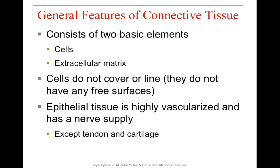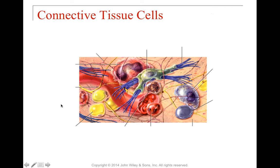Connective tissue has two major elements: the cells themselves and the extracellular matrix. The extracellular matrix is basically the glue that holds the cells together. The cells don't have organizational patterns — they don't cover or line anything, and they don't have free surfaces. Connective tissue is highly vascularized and has a nerve supply. The major exceptions are tendon and cartilage, which are examples of connective tissue that are not highly vascularized or have a nerve supply.